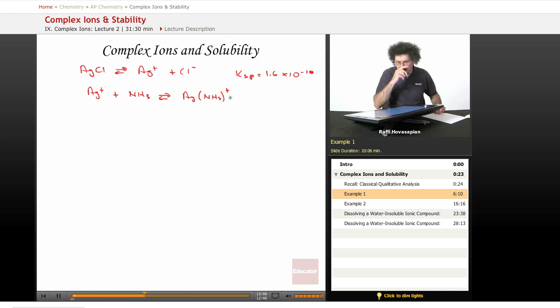In case you're wondering, ammonia when it acts as a ligand is called amine. So that's why I'm saying amine instead of ammonia. I should have mentioned that earlier. K1 equals 2.1 times 10 to the 3.